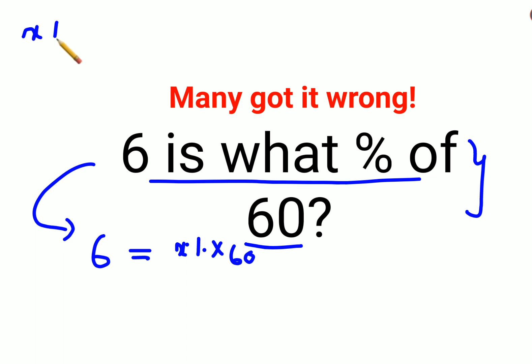Now whenever you have a percent sign ahead of a number, you can convert it into a fraction by dividing that number by 100. So we can say 6 is equal to x/100 times 60.